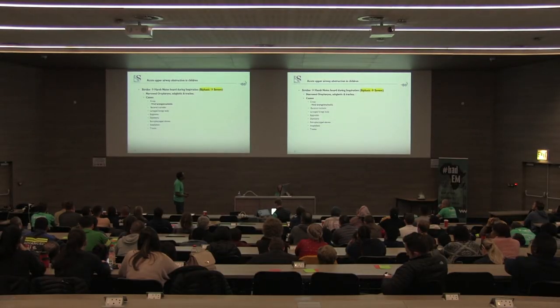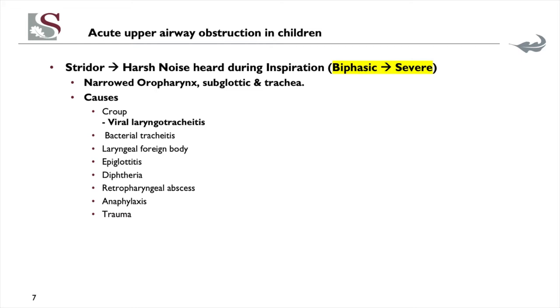Now coming to the interesting stuff that gives every doctor an adrenaline rush — stridor. When we hear a stridor, what does it mean? It's that harsh noise heard during inspiration — though most academics would argue that's not always true, because it depends where the obstruction is. If the obstruction is in the supraglottic region, it's going to be inspiratory. Sometimes you find patients who have been intubated presenting with stridor or a monophonic wheeze. When the stridor is biphasic, you have to start panicking — it tells you about the severity of the obstruction and that this airway might need an airway team.